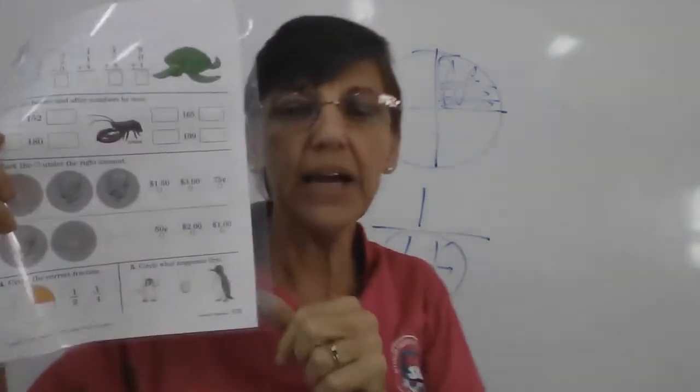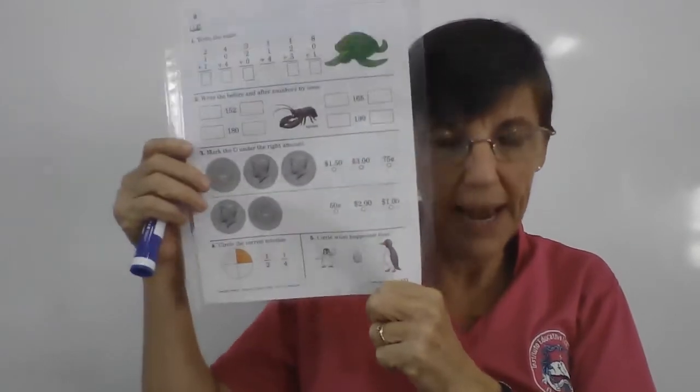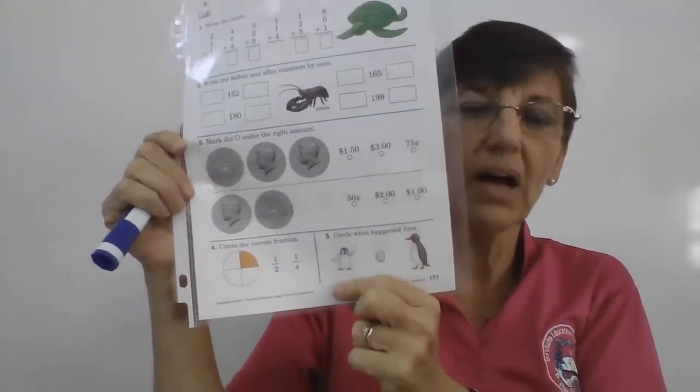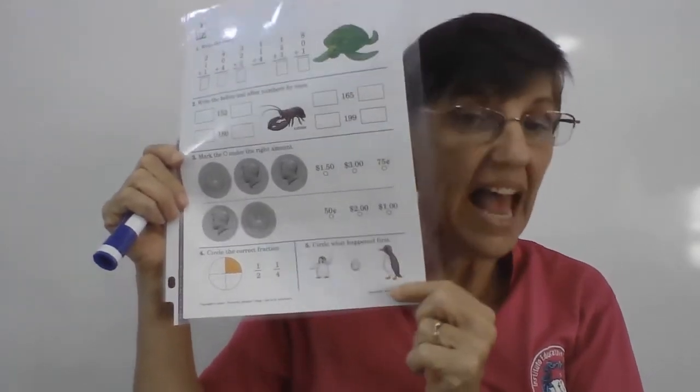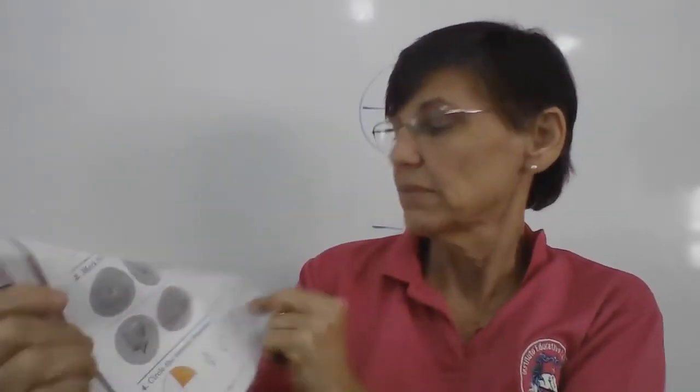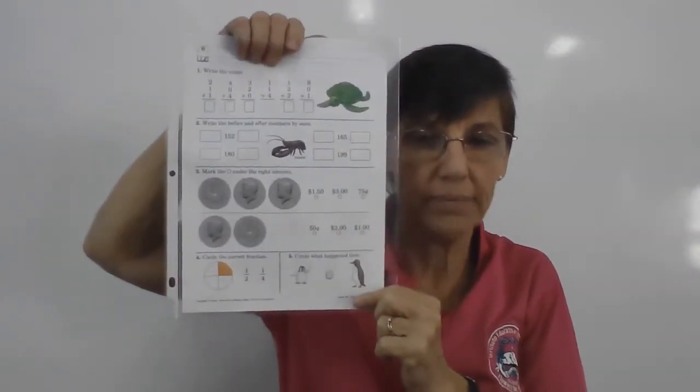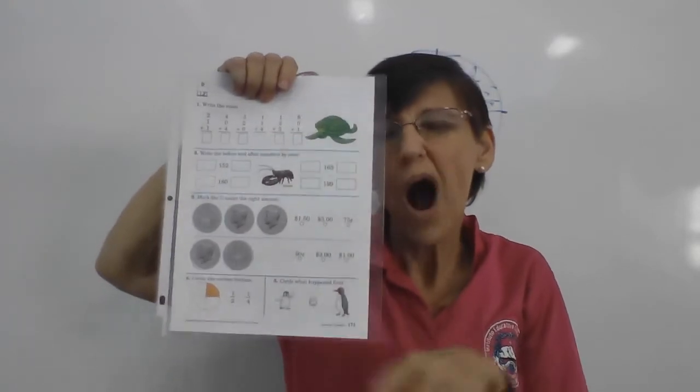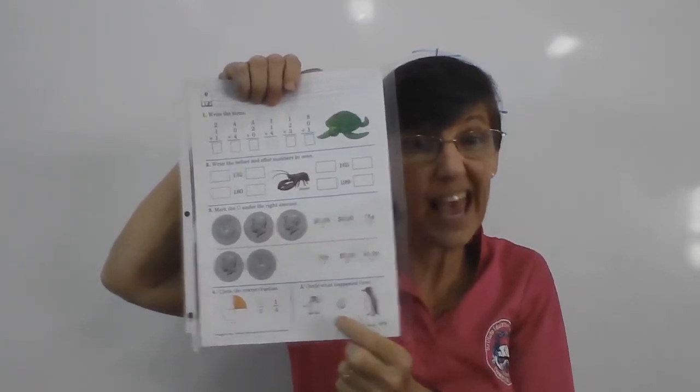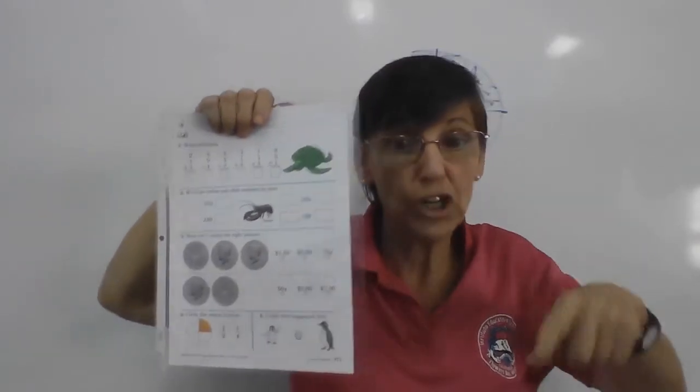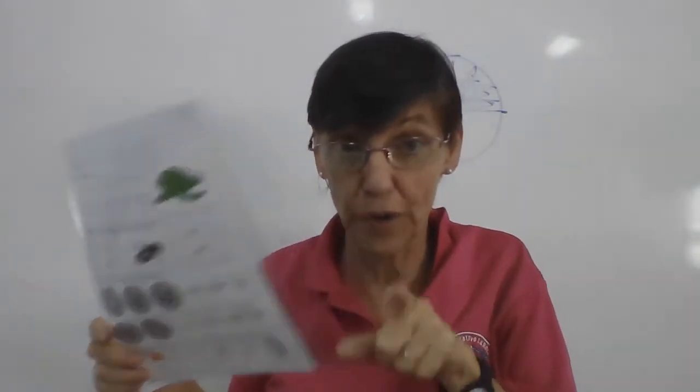Now, here we have a penguin. We have a little baby penguin. We have an egg. And we have either a mommy or a poppy, I don't know which. But we have a big penguin. So, which one of these steps came first? Do we have the baby, then the egg, then the poppy? Who came first? Draw a circle around the part that came first.